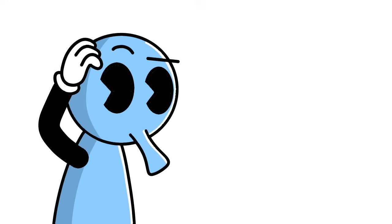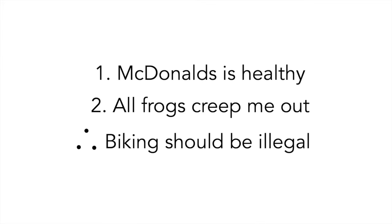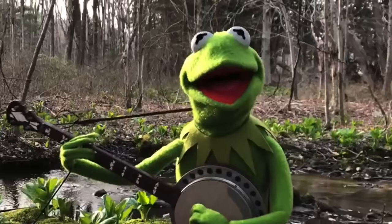So now we know what an argument is, and it might be helpful to think of some argument examples of your own. But we've only just begun. We've actually got to test these things. I mean, consider this example of an argument. McDonald's is healthy. All frogs creep me out. Therefore, biking should be illegal. I mean, it's technically in the form of an argument, but something seems seriously wrong here. And I'm not talking about the fact that I actually like frogs. So when we get an argument like this or any other, we have to put it through two different tests. We have to test whether an argument is valid, and if an argument is sound.